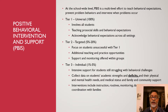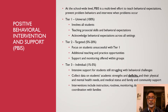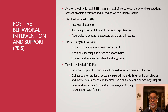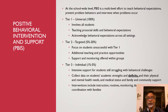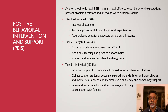Tier 2 is targeted for 5–20% of the school population. This focuses on students who are not successful with Tier 1. It involves additional teaching and practice opportunities and includes support offered to students within specific groups. Tier 3 is more individual — it involves 1–5% of the student population, with intensive support for students who are struggling with behavioral challenges. It involves collecting data on students' academic strengths and deficits, and their physical and mental health needs, medical status, and family and community supports.